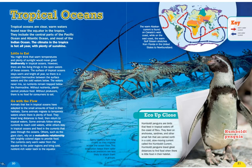Tropical oceans are clear, warm waters found near the equator. They include the central parts of the Pacific and Atlantic oceans and most of the Indian Ocean. Despite warm temperatures and plenty of sunshine, there are few living things in the open waters of tropical oceans. The surface stays warm and bright all year, creating a constant thermocline between surface waters and cold waters below. The waters never mix, so nutrients remain trapped below the thermocline. Without nutrients, plants cannot produce food, and without producers, there is no food for consumers.